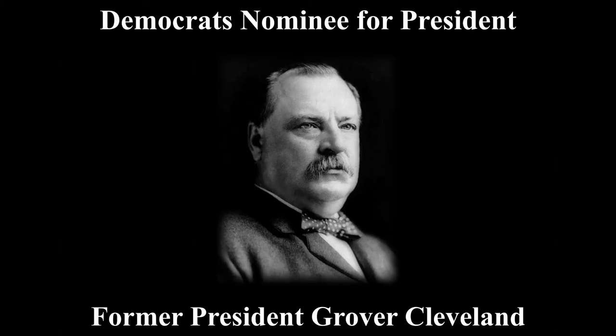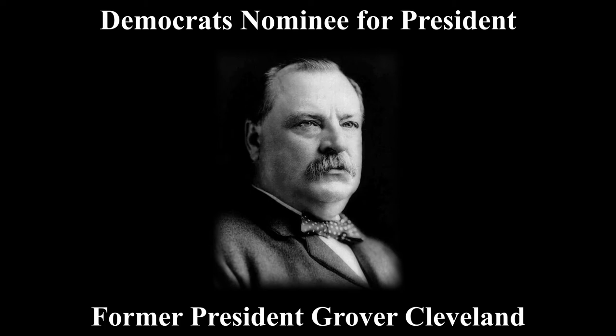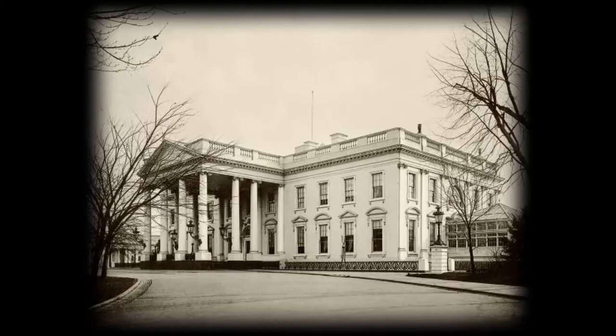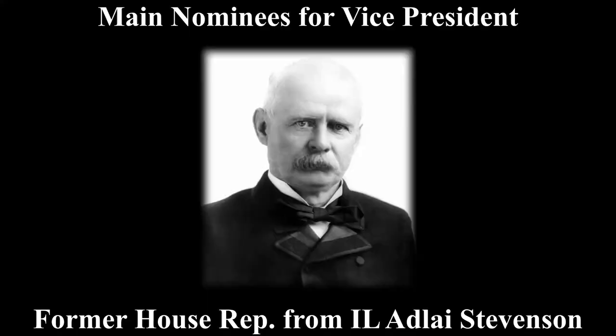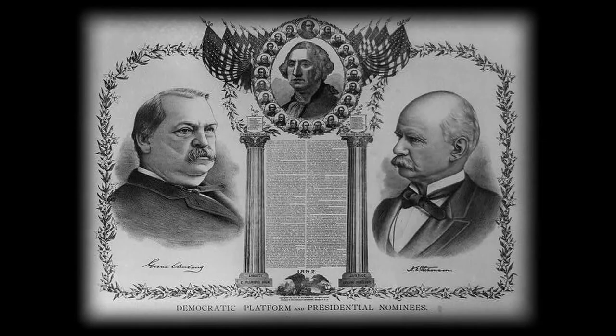For Democrats, their nominee for president was former President Grover Cleveland, who was looking to get back to the White House. For Vice President, the nominees were former House Representative from Illinois Adlai Stevenson, alongside former Indiana Governor Isaac P. Gray. The convention picked Adlai Stevenson to help Cleveland win a non-consecutive second term.